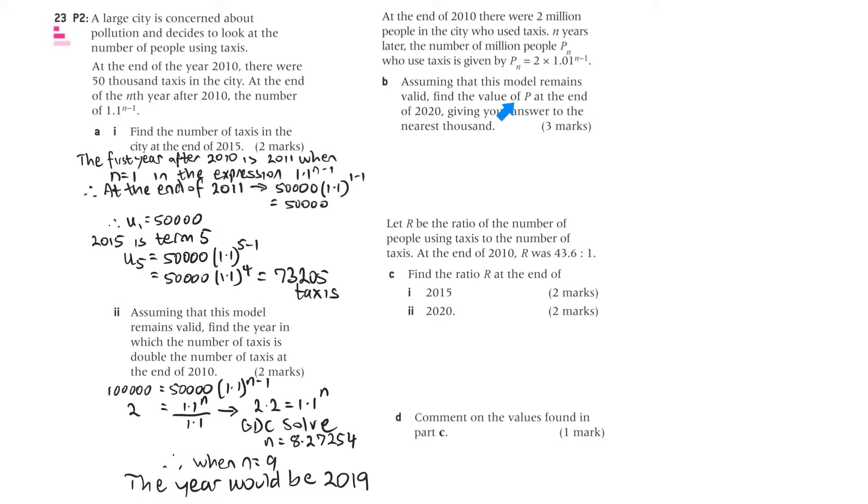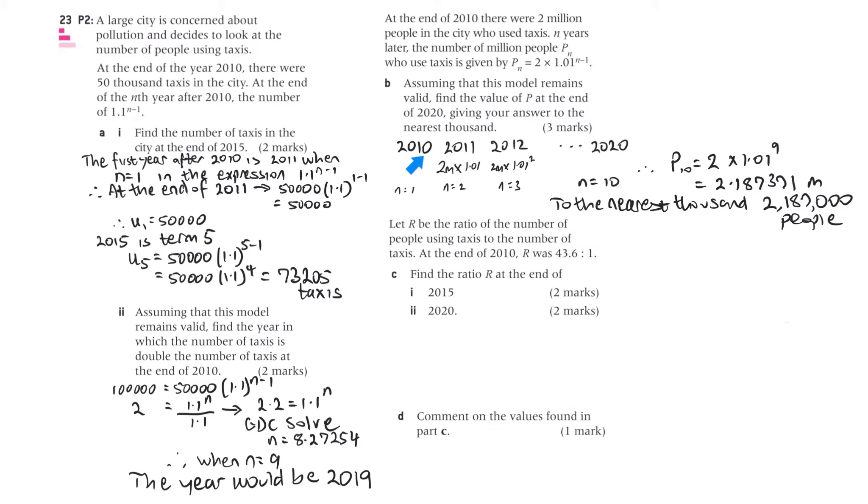Part B. Assuming that this model remains valid, find the value of p at the end of 2020, giving your answer to the nearest 1,000. Let's set up a table. They told us in 2010, that's the end of 2010. So it is a bit confusing because they've got at the end of, but 2010 is effectively 2011, right? But 2010, we'll call that n equals 1. And 2011 will be n equals 2, and we'll go up that way. So we'll find that 2020 will be actually the number at the end of 2019. So that's when n equals 10. So that's the key number we need to remember there. Remember, they said at the end of 2019, so that'll be 2020. So we're looking at n equals 10. So we put 10 into this formula here, and we find that the total, these are millions of people. So that's 2.187371 million to the nearest 1,000. That's 2,187,000 people.